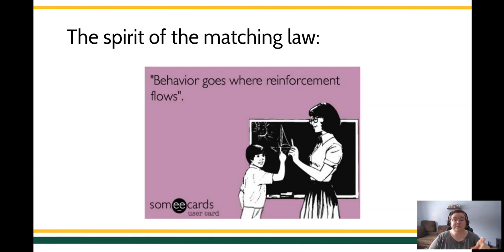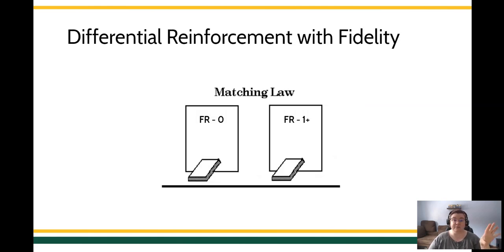Let's think about this from a simple differential reinforcement using extinction to try to decrease the rate of a response paradigm. If you have a learner, a client, a loved one, someone that you're trying to decrease the rate of a response, and you want that rate of the response to be zero, what are you going to do? How do you make sure that the levers are paying off? Well, you want to make sure that one lever, one behavior, doesn't contact reinforcement. You want to make sure that you are using extinction with fidelity on that one lever. Whatever the target behavior is you're trying to decrease, do not reinforce it. No way, no how, never.